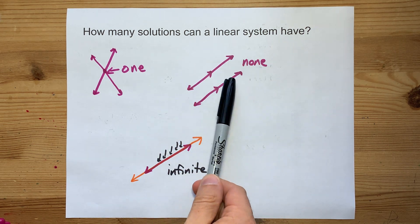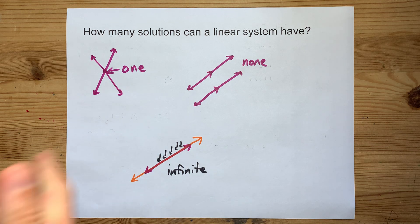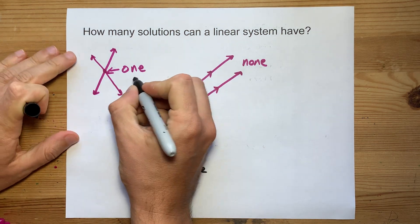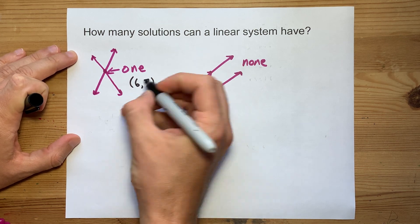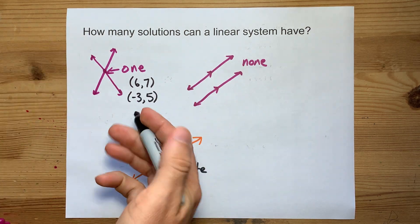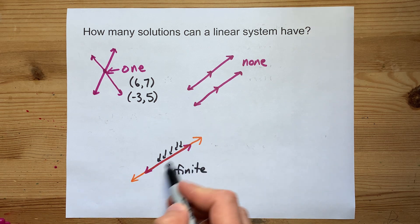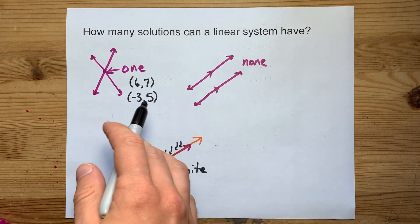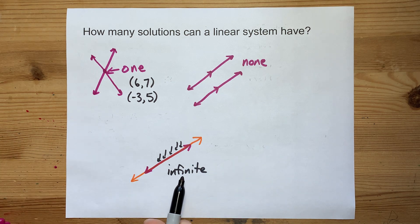So a linear system can either have no solution, one particular solution — in which case you can state your solution as a point, like (0.6, 7) or (-3, 5) — or, if the two lines you're asked about are the same line, you'll say there are infinite solutions. Best of luck.